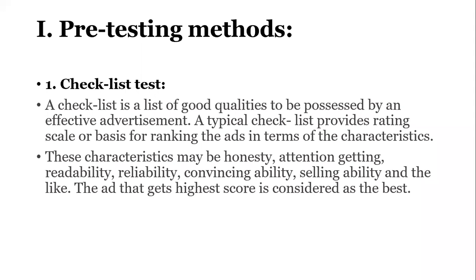The checklist method is a list of good qualities to be possessed by an effective advertisement. We use a checklist for the characteristics an advertisement should have. These include honesty — the advertisement should not make fake promises. It should be attention-getting, readable and understandable to anyone, reliable so people trust the data provided, convincing so consumers come and purchase, and have selling ability. The advertisement should sell products when published and consumers should like it. The highest score is considered the best advertisement.